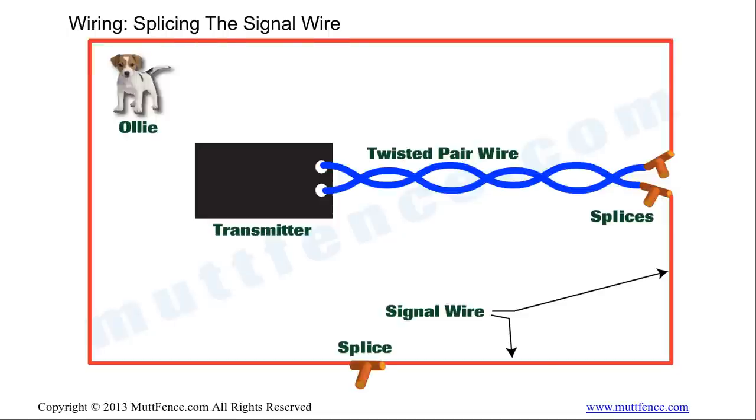If you run out of signal wire, you can splice more signal wire together. Because it's one wire, you just need a single splice to do this. Signal wire is in 500 foot spools, so when you run out, another splice, another spool of wire, and you can continue wiring the enclosure. You can join any number of these together. Just be aware that some fence transmitters have a limit to the amount of wire that they can support.